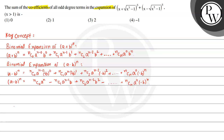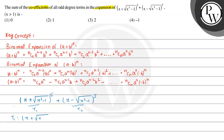We will use this concept to solve the given question. We have been given (x + √(x³-1))⁵ + (x - √(x³-1))⁵. Let us consider the first term as t1 and the second term as t2. So t1 = (x + √(x³-1))⁵.